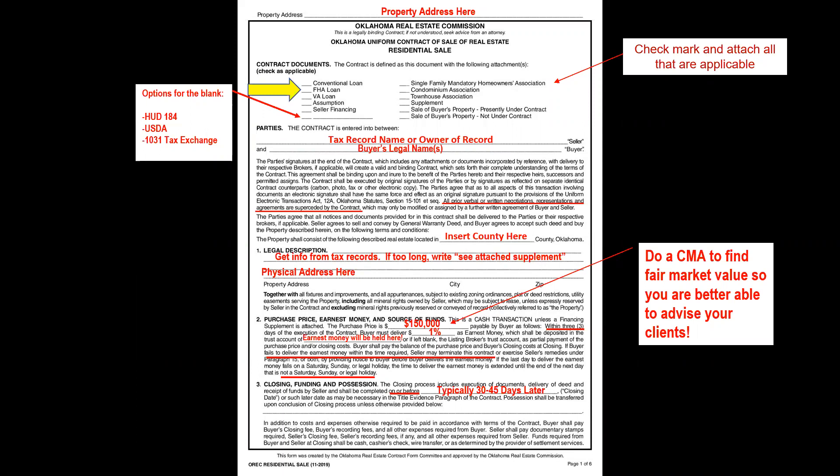The closing paragraph also specifies that funds brought to closing can be cash, cashier's check, or wire transfer. Although cash is listed because it is legal tender, title companies will not accept large sums of cash due to the Patriot Act. So buyers should bring a cashier's check or arrange a wire transfer.